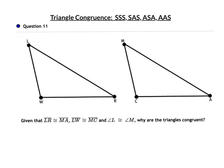In question 11, our given is that LR is congruent to MA, LW is congruent to MC, and angle L is congruent to angle M. Notice how the angle is between the two sides — it's an included angle. Therefore we have Side-Angle-Side.